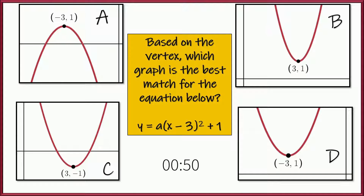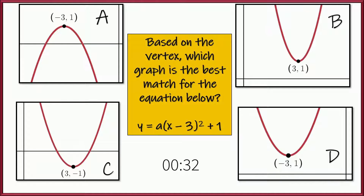So which of these graphs — a, b, c, or d — is the best match for this equation, y equals a quantity x minus 3 squared plus 1, based on the vertex alone? Let me know your answer in the comments and I'll let you know how you did. Go ahead and try it now.